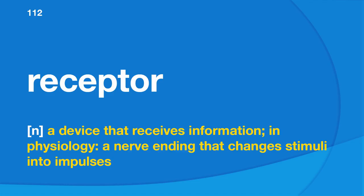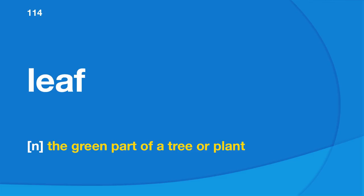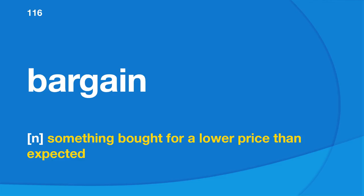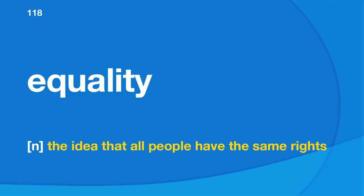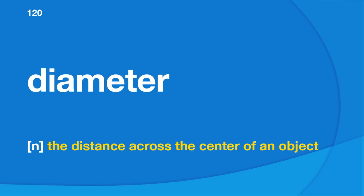Receptor: a device that receives information; in physiology, a nerve ending that changes stimuli into impulses. Bleed: to lose blood because of an injury. Leaf: the green part of a tree or plant. Coherent: logical and well-organized. Bargain: something bought for a lower price than expected. Adjacent: being close or near to a border, wall, or point. Equality: the idea that all people have the same rights.